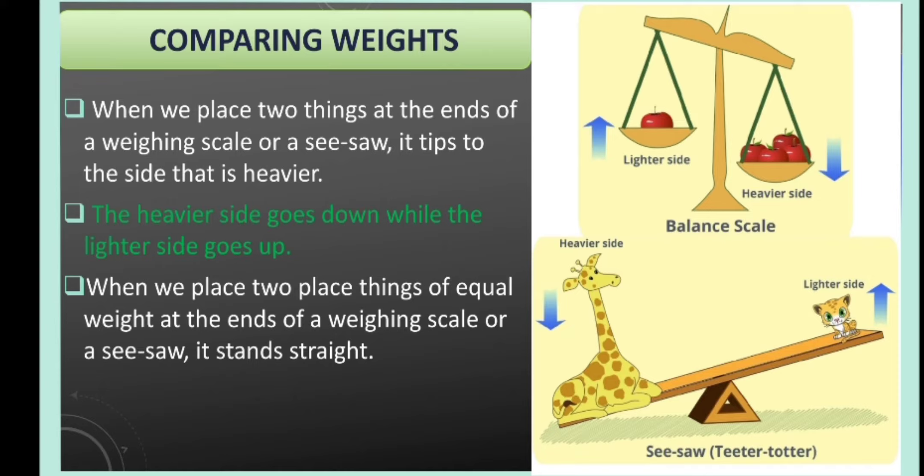Also, if both objects' weights are equal, you see the see-saw or the weighing scale standing straight. This is the logic: heavier side down, lighter side up.